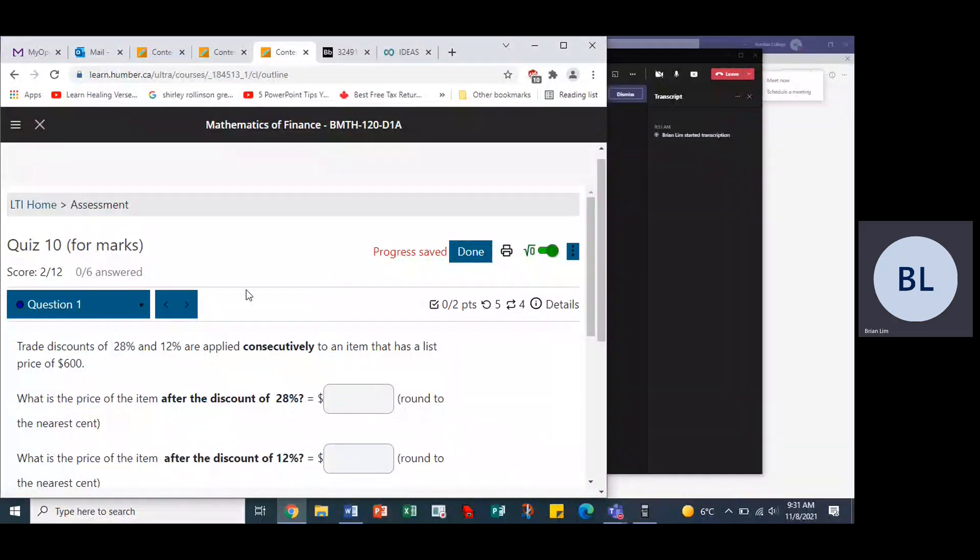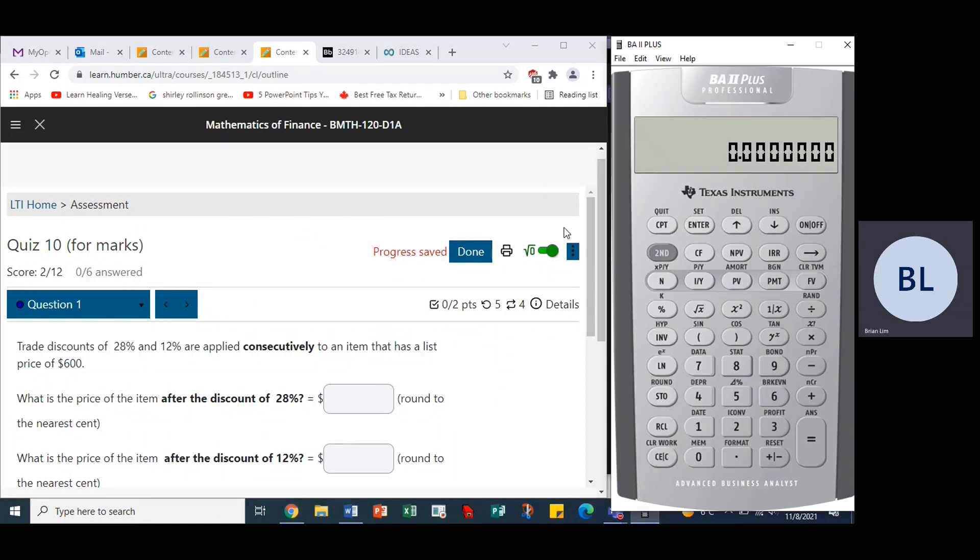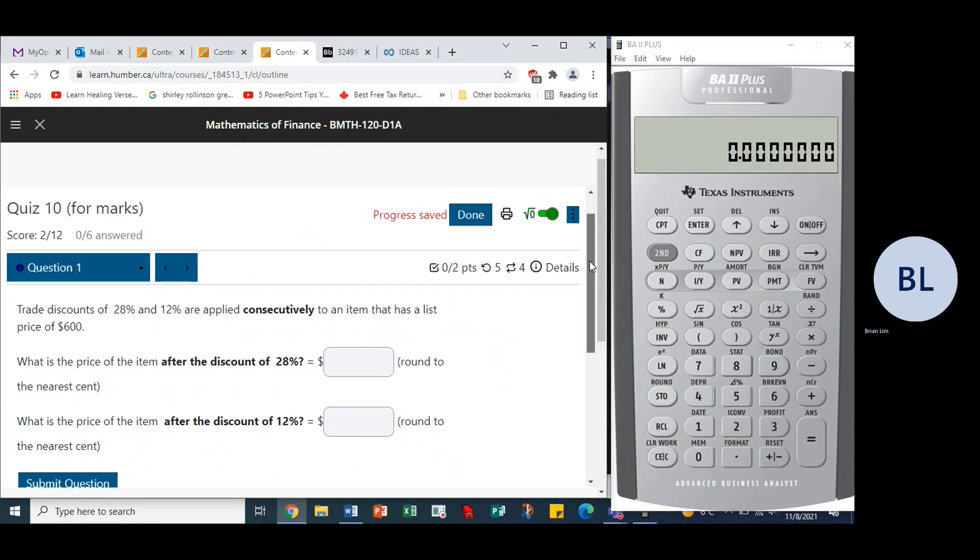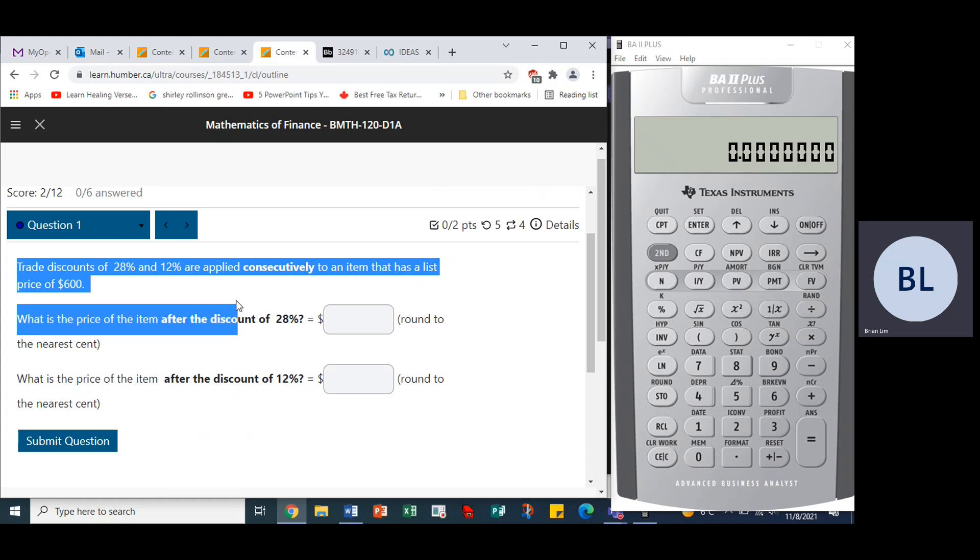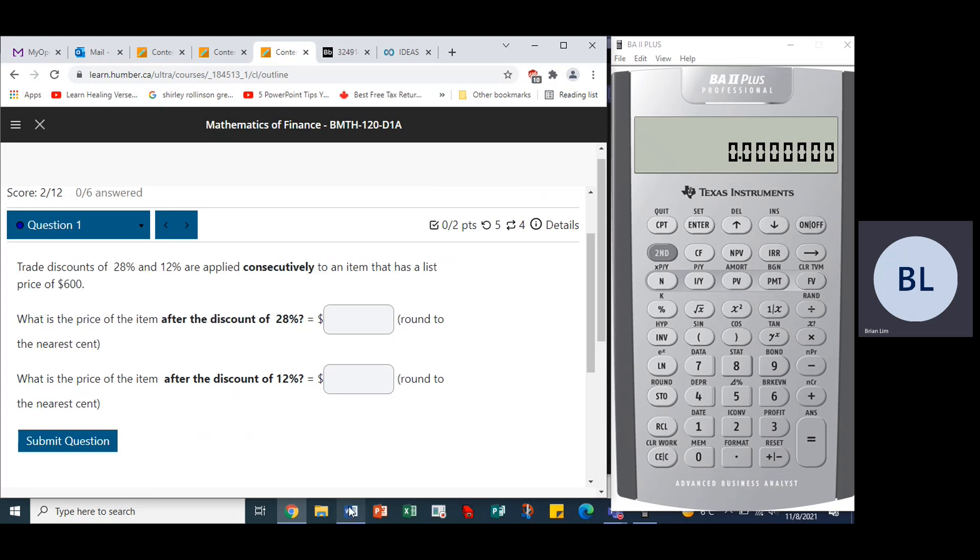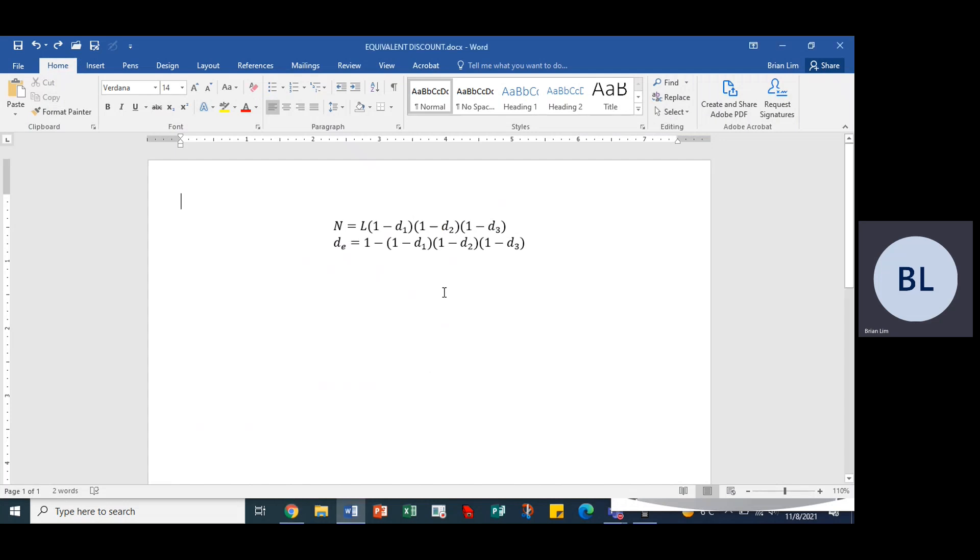Okay, quiz 10 question one. Let's look at it. Trade discounts of 28% and 12% are applied consecutively to an item that has a list price of $600. What is the price of the item after the discount of 28 percent, rounded to the nearest cent? Okay, let's copy that and put it into our Word document.